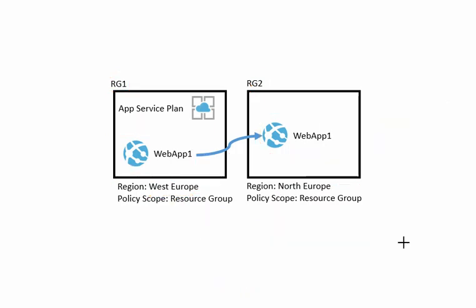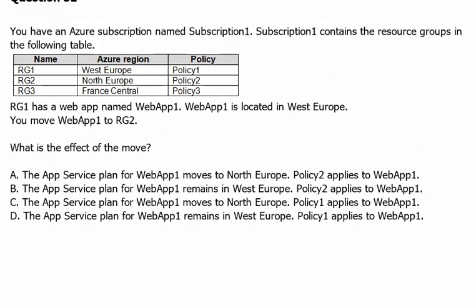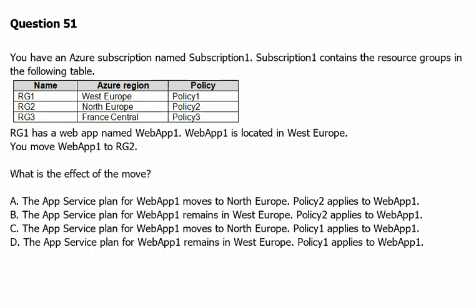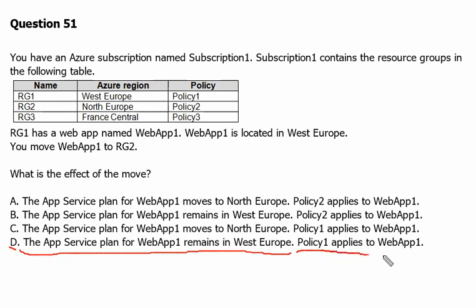Now back to the question — let's look at the options. Starting with Option D: the app service plan for Web App 1 remains in West Europe — that part is correct. However, it also states Policy 1 applies to Web App 1, which is wrong. Policy 1 is applied to Resource Group 1, not Resource Group 2. Once we move the application to RG2, the policy of RG2 applies.